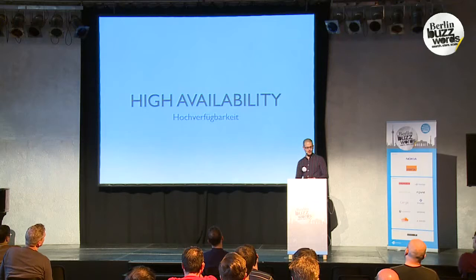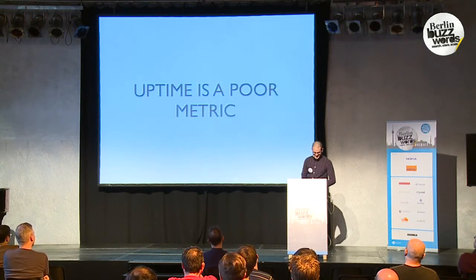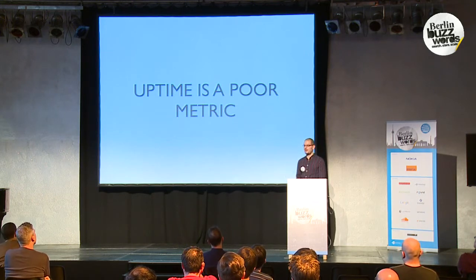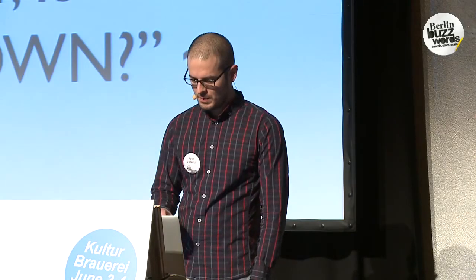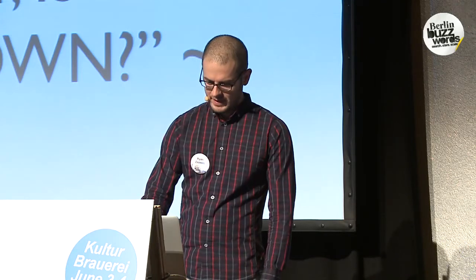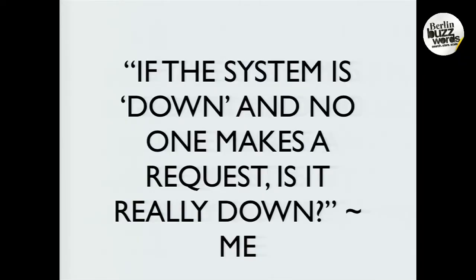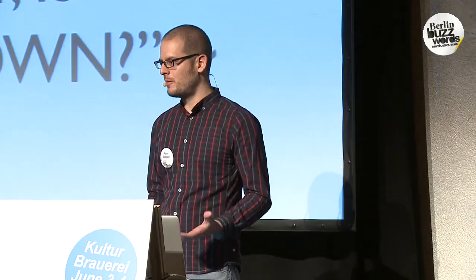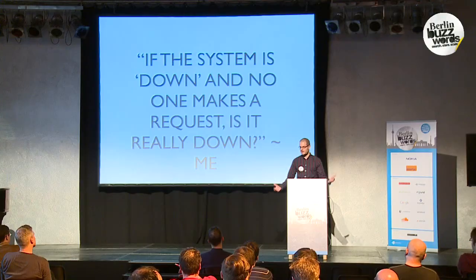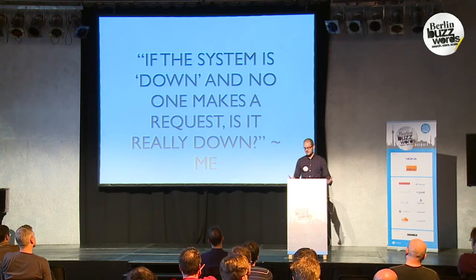So, high availability. I'm going to start this with a rant. Everyone loves to talk about uptime — how many nines you have — but uptime is a poor metric. If the system is down and no one makes a request, is it really down? If your users don't notice your downtime, then is it really down? If you have downtime during peak hours versus off-peak hours, that's vastly different, especially if these queries are what drives the revenue of your company. You don't necessarily care that your system was down at 12 o'clock at night when no one was using it, but if it was down at 12 in the afternoon during your peak herd-effect traffic, that's a big deal.